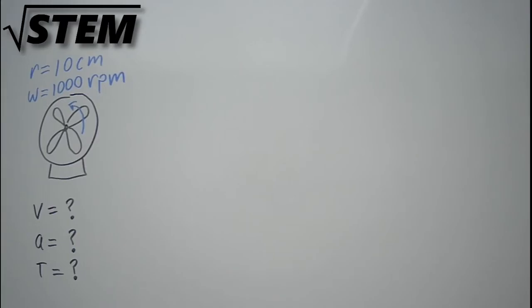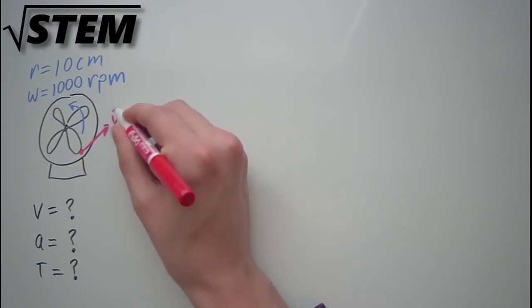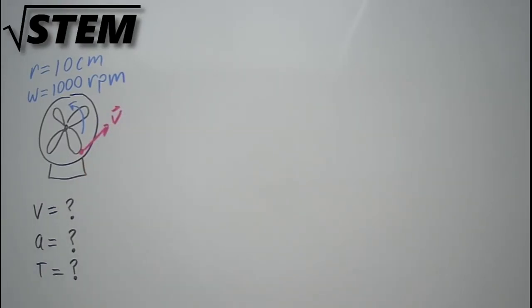Now for this velocity, first we need to understand that we're talking about the tangential velocity or the velocity in a line that is tangent to the circular motion of the blades. Just like the relationship between the angle that you span and the arc length on the outside of a circle, s equals r theta, we can find this tangential velocity with the relationship v equals r times omega, where omega is the angular velocity in radians per second.